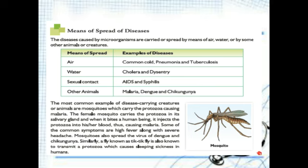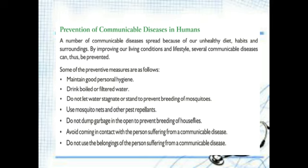How can we prevent these communicable diseases? We should maintain good hygiene, be very clean, drink clean water, and eat good food. We should use mosquito repellents to get rid of mosquitoes. Maintain good personal hygiene and drink boiled and filtered water.